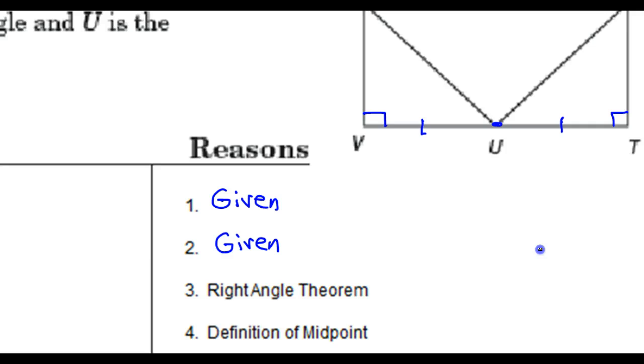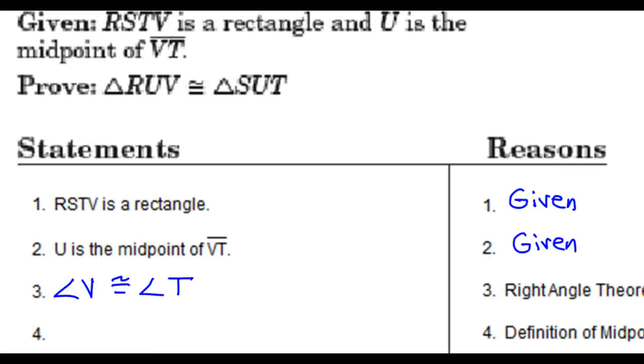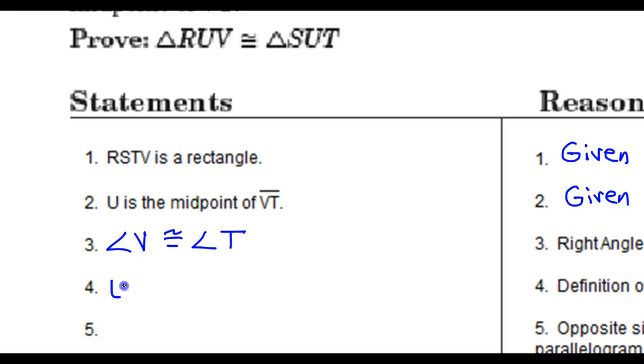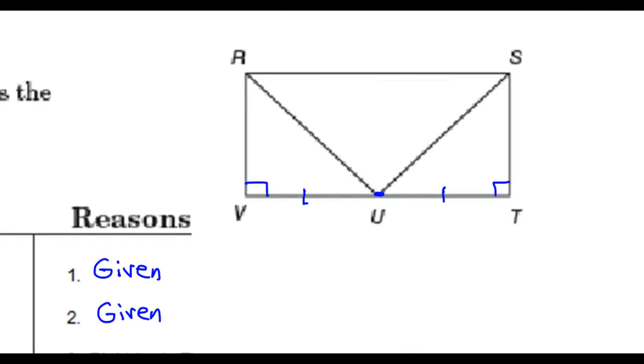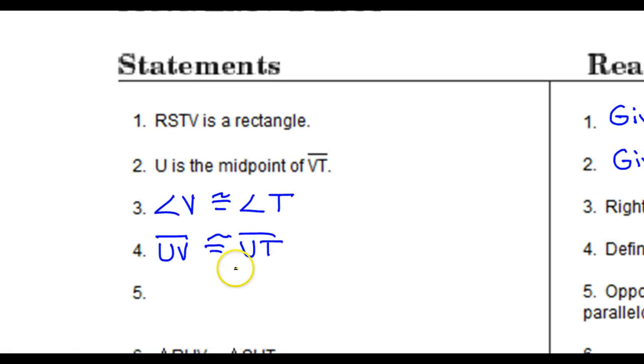Definition of midpoint. Well, U was the midpoint, and by definition, VU is congruent to UT. Number five says opposite sides of a parallelogram are congruent. So what are these opposite sides? Well, that's RV and ST are opposite sides. So that would make sense to mark those. So RV is congruent to ST.